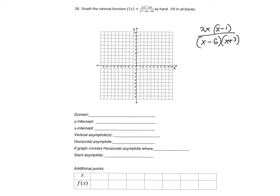So the first thing it wants is the domain. For domain, all we need to look at is where the bottom is undefined, and so it'll be at 6 and negative 3. So the domain will be everything except those numbers. We'll have negative infinity to negative 3, then negative 3 to 6, and then from 6 to infinity. So we put parentheses with unions between them — that's our domain.